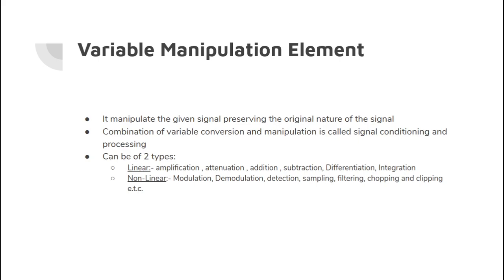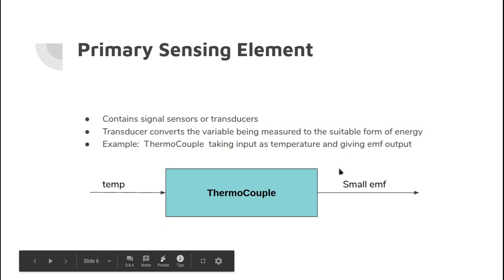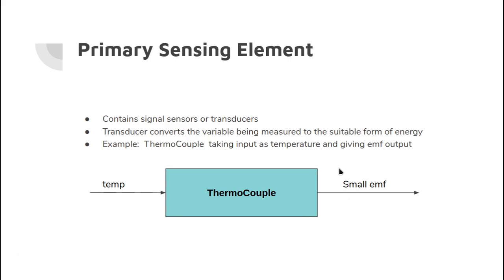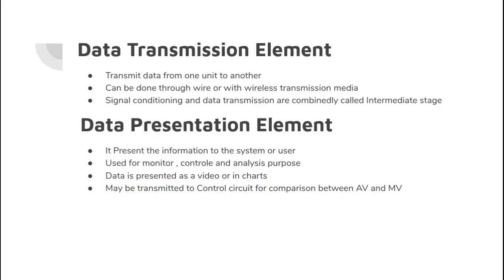Next we have the variable manipulation element. In the variable manipulation element, it manipulates the given signal while preserving the original nature of the signal. The reason for manipulation might be that the signal is not suitable for use in its current state. Going back to the thermocouple example, after the thermocouple provides a small EMF, it might be hard to work with, so we may need to amplify it. There can be two types of manipulation elements: linear — which consists of amplification, addition, subtraction, differentiation, integration, etc. — and nonlinear — which consists of modulation, demodulation, detection, sampling, filtering, chopping, clamping, etc.